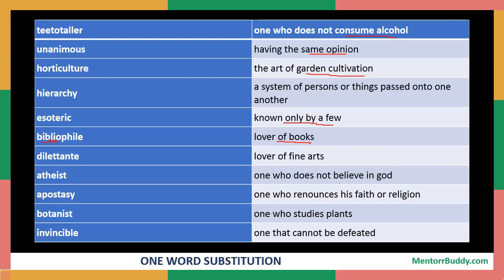Then we have 'dilettant', that is lover of fine arts. Then 'atheist' — atheist is one who does not believe in God. Then 'apostasy' — one who renounces his faith or religion is apostasy. Then 'botanist' — we all know botanist means one who studies plants. Then 'invincible' means one that cannot be defeated or conquered, so that is an invincible ruler or king.